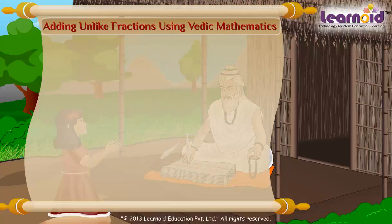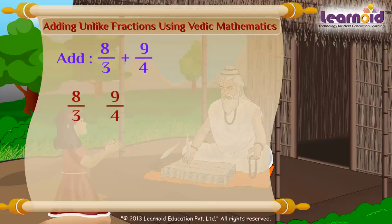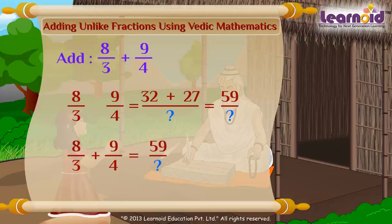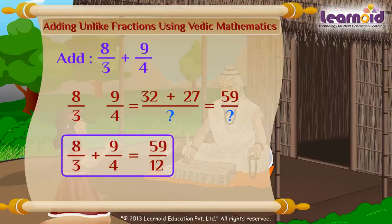Let's check one more example. We have to add 8 by 3 and 9 by 4. To get the numerator of the sum, multiply crosswise: 8 into 4 equals 32, and 9 into 3 equals 27. So, 32 plus 27 equals 59. For the denominator, multiply the two denominators: 3 into 4 equals 12. So, the answer is 59 by 12.